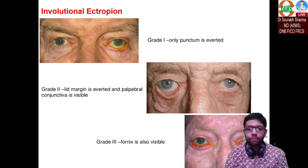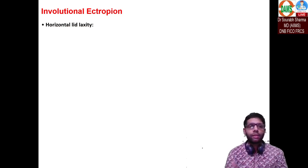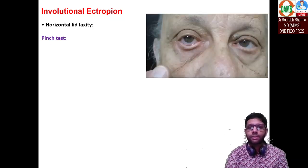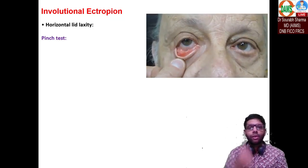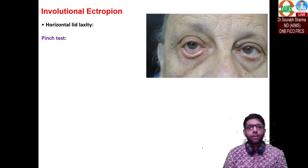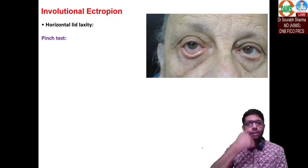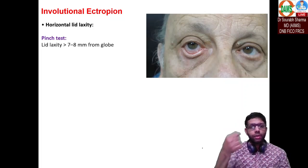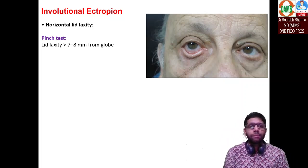Next, you can tell the examiner you would like to do some tests. Involutional ectropion can be because of horizontal lid laxity — if the horizontal eyelid is very lax, that can lead to outward turning of the eyelid margin. The pinch test involves pinching the lower eyelid — if you are able to retract more than seven to eight millimeters from the globe, it means the lid is lax.